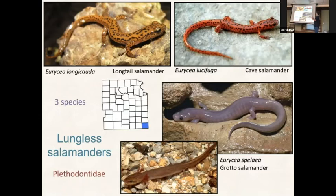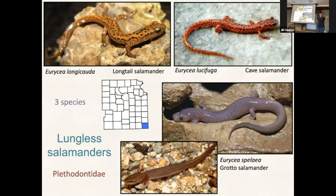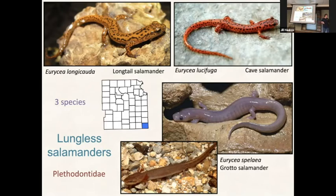We have three species of lungless salamanders - plethodons - which are forest salamanders from the east that are really small. They're lungless because they don't have lungs - they get all their gas exchange through their skin, so they have to keep their skin moist. This is true for all amphibians really - their skin is very important for survival, for gas exchange and moisture. The grotto salamander - we've only ever found one adult in Kansas. It's really rare and I think it lives in caves down there.